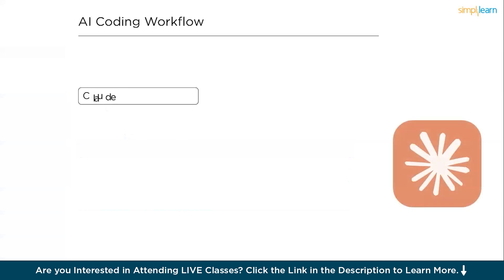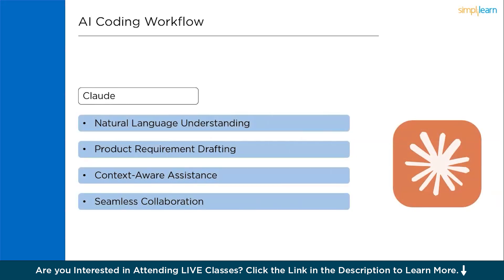Next, we have Claude, one of the top LLMs out there. First, natural language understanding — Claude excels at interpreting complex prompts and turning ideas into clear, structured content, perfect for planning software projects. Second, product requirement drafting — use Claude to write detailed PRDs without needing technical expertise. Third, context-aware assistance — it handles long-form inputs with ease, maintaining coherence across large documents and iterative edits. And lastly, seamless collaboration — Claude is like having a thoughtful co-founder that helps shape your vision into actionable specs for design and development.